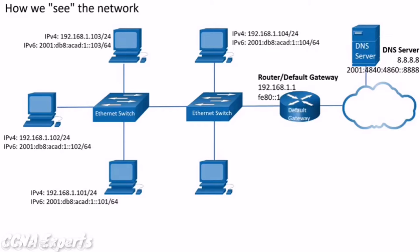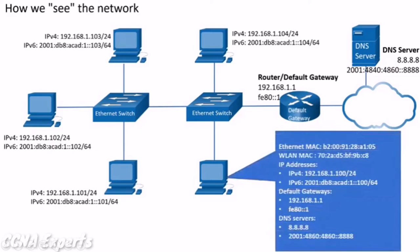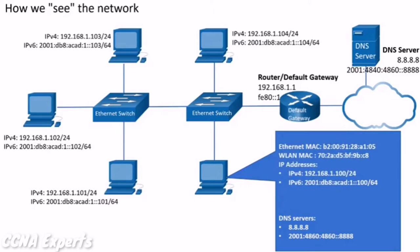These diagrams may also contain detailed information about a device, such as the MAC address of the Ethernet and wireless NICs, IP or Internet Protocol address information, default gateway addresses, and addresses for the DNS server. Don't worry about what these terms and addresses mean right now — all of this will be explained throughout this course.